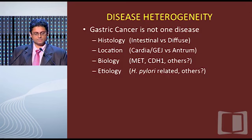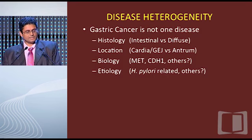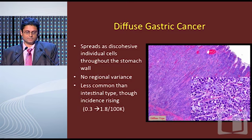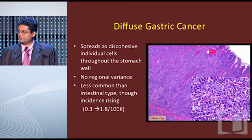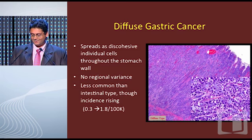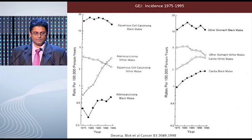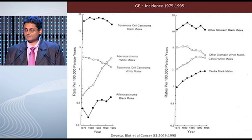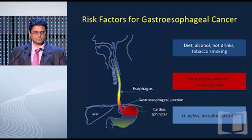Regarding heterogeneity: histology includes intestinal, diffuse, and mixed types. Location is very different — proximal tumors have a different epidemiology than antral tumors. This is a picture of intestinal gastric cancer, and here is diffuse gastric cancer with no formation of crypts or circular structures — cells growing in a discohesive way through the stomach wall. Epidemiologic data suggests GE junction or distal esophageal/proximal stomach cancers are rising in incidence in both the U.S. and Europe, whereas true distal gastric cancer caused by chronic inflammation is decreasing.